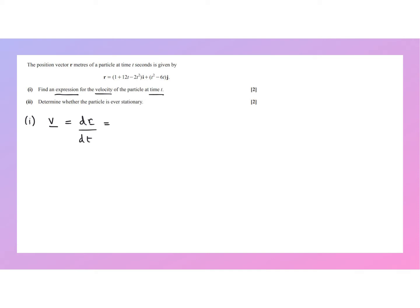So if we start with the i component first of all, that's here, differentiating this with respect to time. So 1 differentiates to 0, 12t differentiates to 12, and then we have 12 minus 4ti.